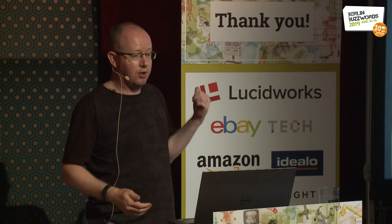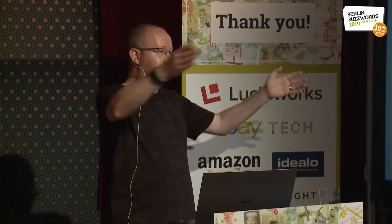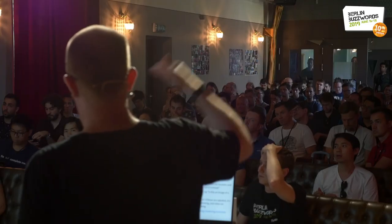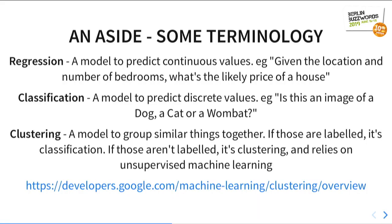Regression is about predicting continuous values — for example, given location and number of bedrooms, give me a value between one and two million for how much this house is worth. Classification is for discrete values — here's an image, dog, cat, or wombat, give me one specific answer. And clustering is where you're not actually sure what goes together — here's a load of images, figure out which ones are like each other and group them. That's unsupervised machine learning.